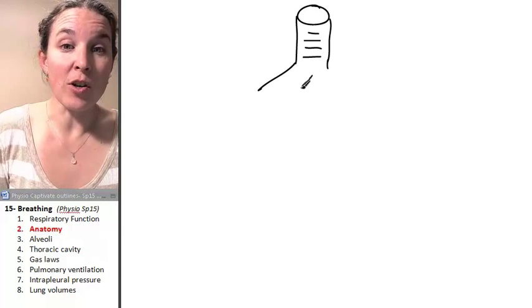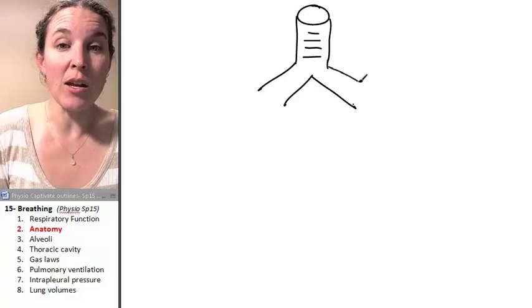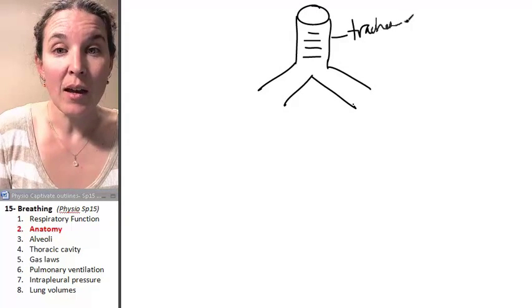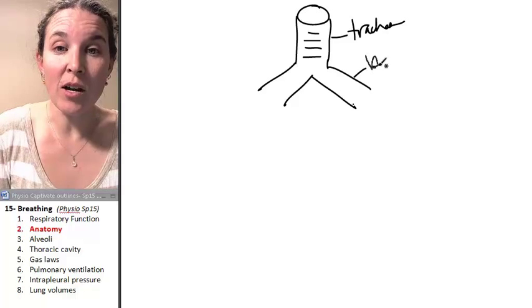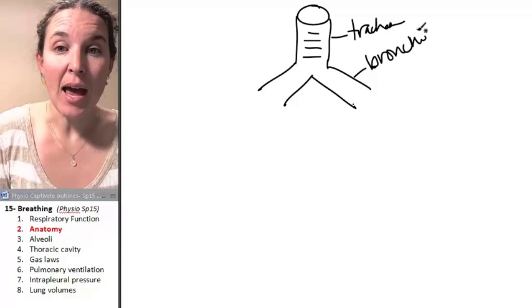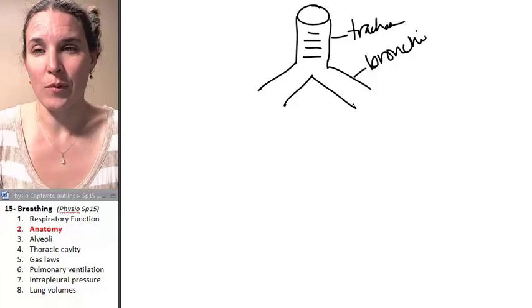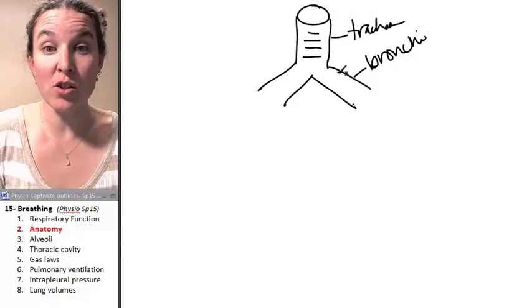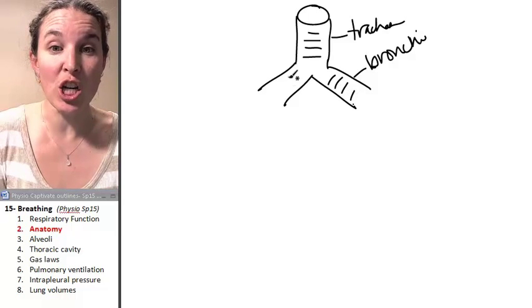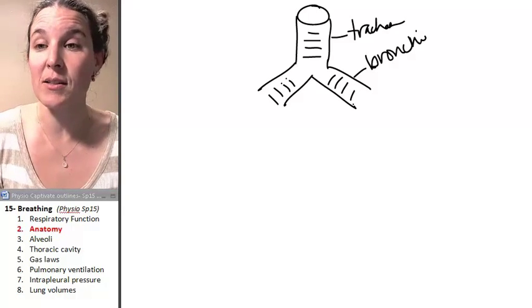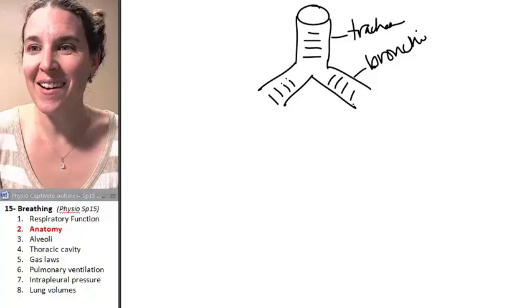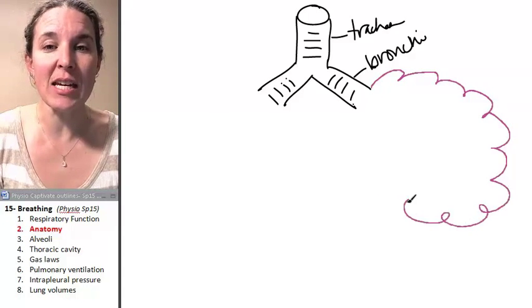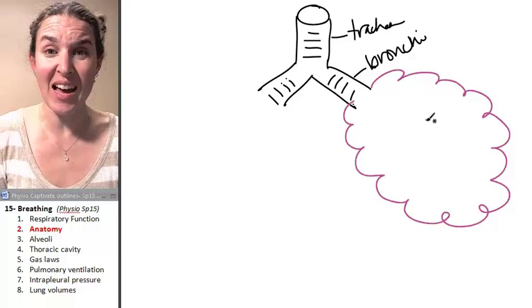And then we hit our first bifurcation. As soon as the trachea bifurcates, you have a bronchi. The first bifurcation, these are primary bronchi. The bronchi are still surrounded in cartilage. I will change color when that changes. The bronchi essentially feed into the lungs. That's a lung.